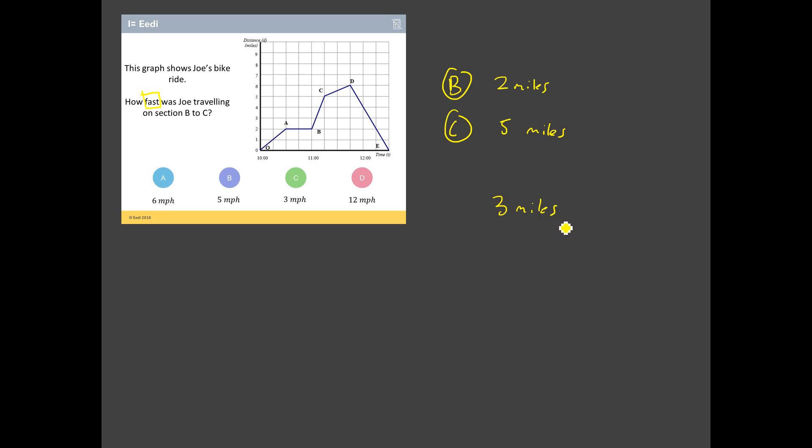If it took Joe an hour, then fine. He's travelled 3 miles in an hour. But has he? Well, he's gone across 1 square in terms of time. Let's look at our scale here. There's 11 o'clock. There's 12 o'clock. How many squares in between them? 1, 2, 3, 4. So, actually 1 square doesn't mean an hour. 1 square's 15 minutes or a quarter of an hour.